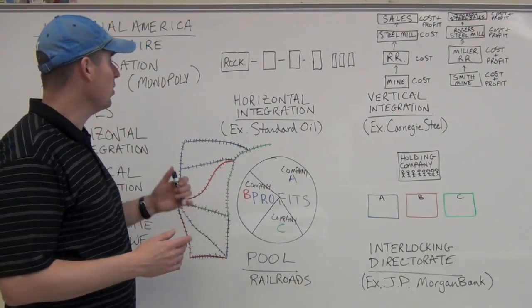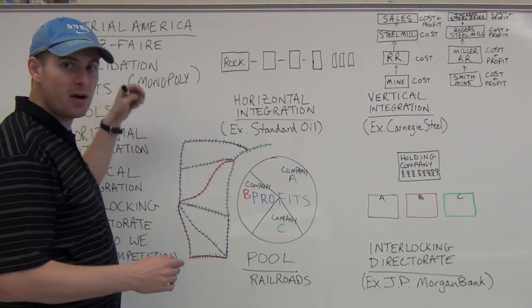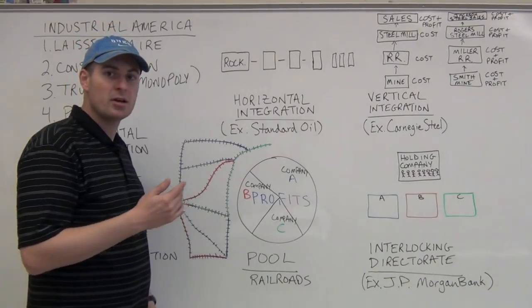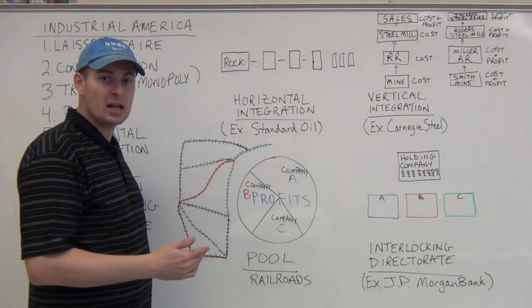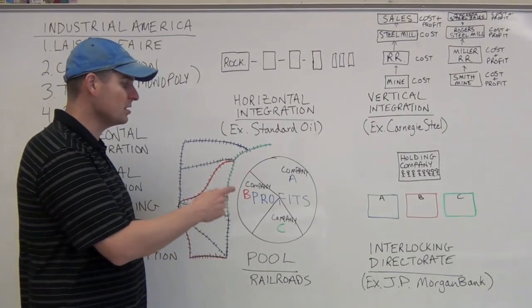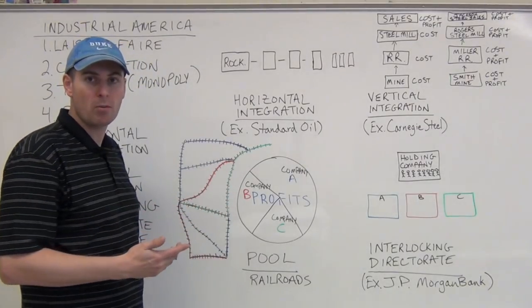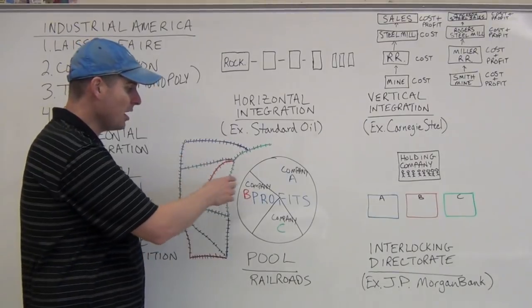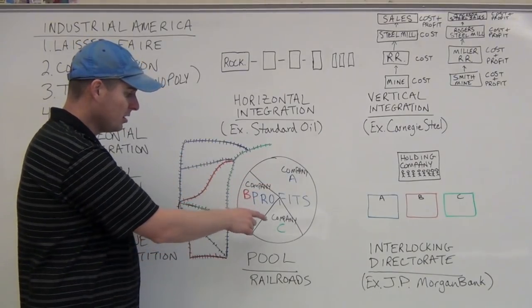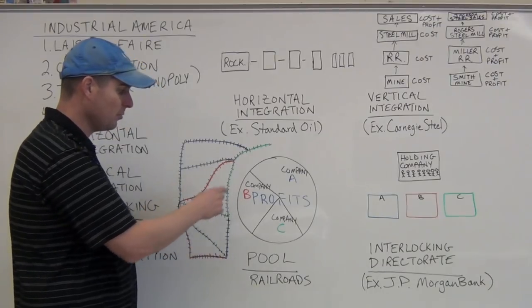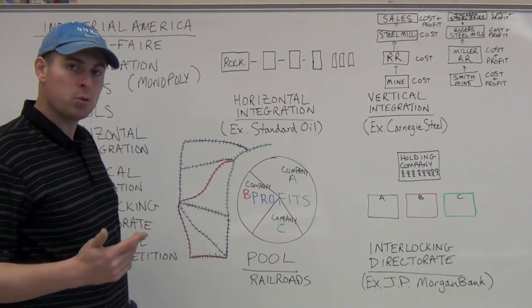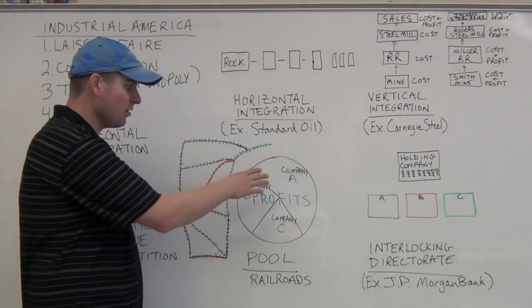You have company A, and their lines are the blue lines. They've built them with a government subsidy, of course, because these companies, while they're operating under laissez-faire, definitely want government handouts. And the government is willing to subsidize, give them money to help pay for the costs of expanding westward. So we've got the blue line, company B, company C.